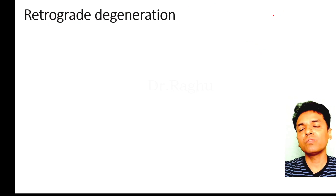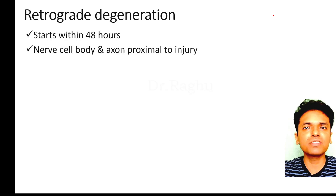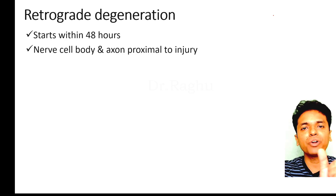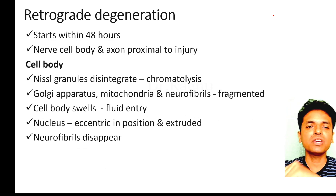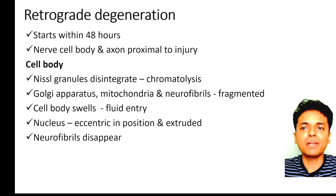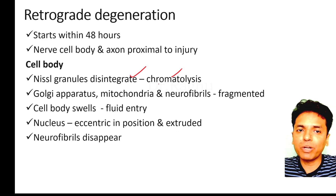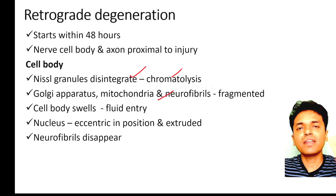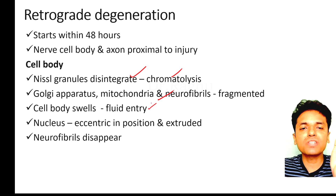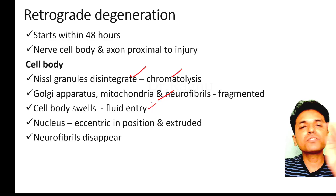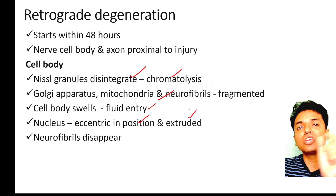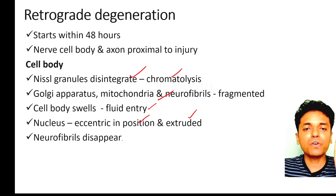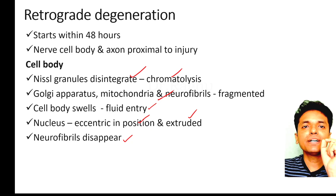Retrograde degeneration begins within 48 hours after the injury and involves the cell body as well as the axon proximal to the injury. Changes in the cell body include: the Nissl granules disintegrate — a process called chromatolysis. The Golgi apparatus, mitochondria, and neurofibrils are also fragmented. The cell body swells due to entry of fluid from outside, pushing the nucleus to the periphery — the nucleus becomes eccentric. In severe injury, the nucleus may be extruded out of the cell. The neurofibrils in the cell body also disappear.